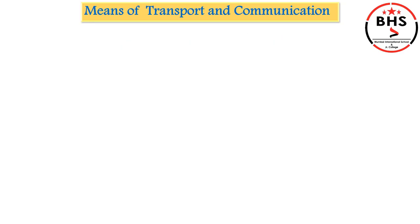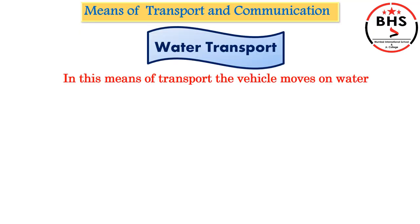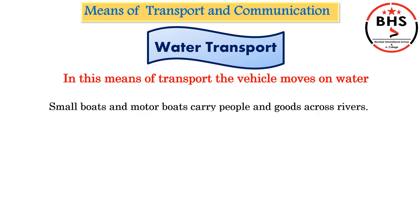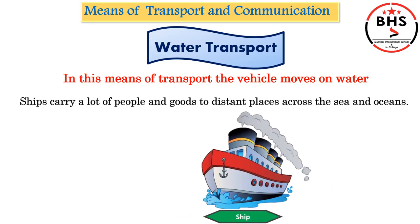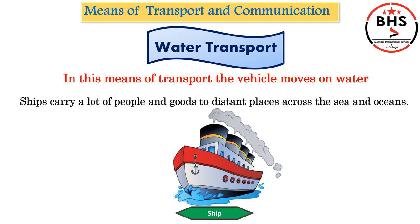Let us learn about the next means of transport: water transport. In this means of transport, the vehicle moves on water. Small boats and motor boats are used to carry people and goods across rivers. Ships carry a lot of people and goods to distant, far away places across the sea and oceans.